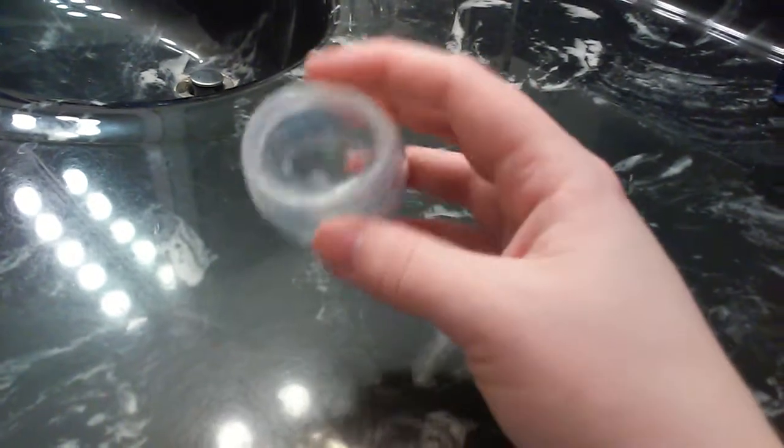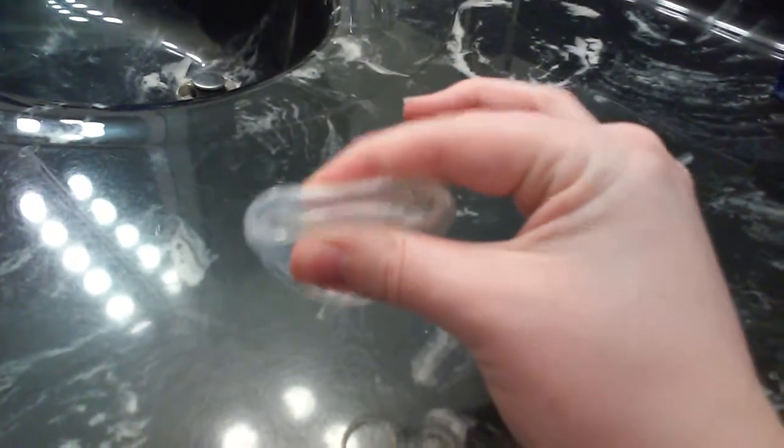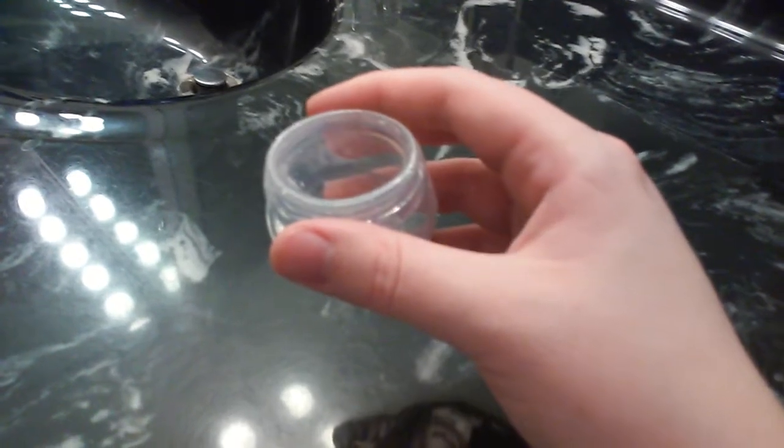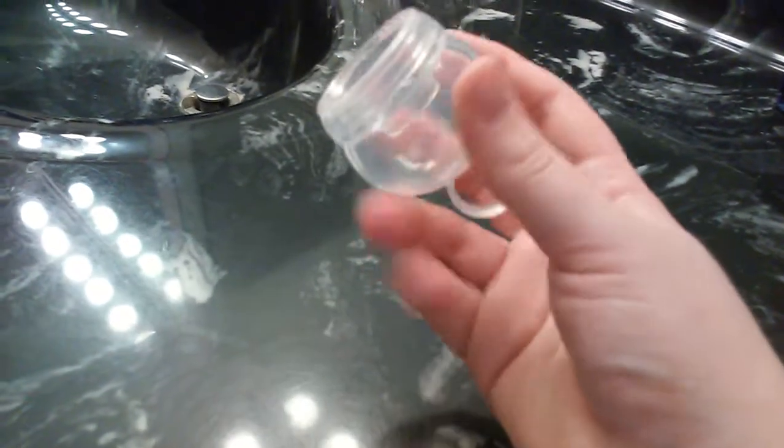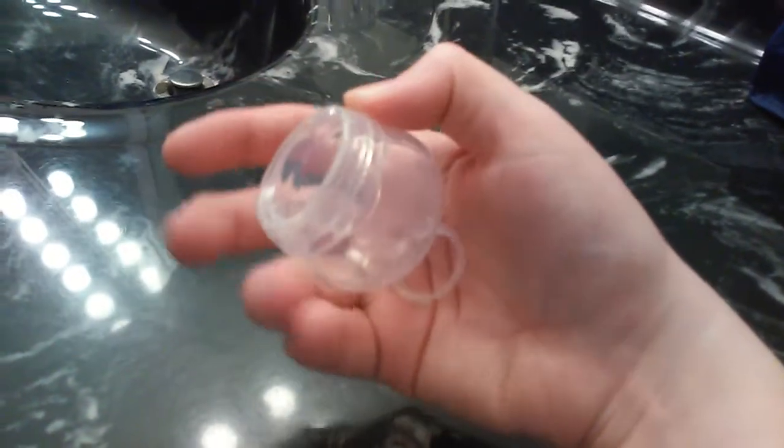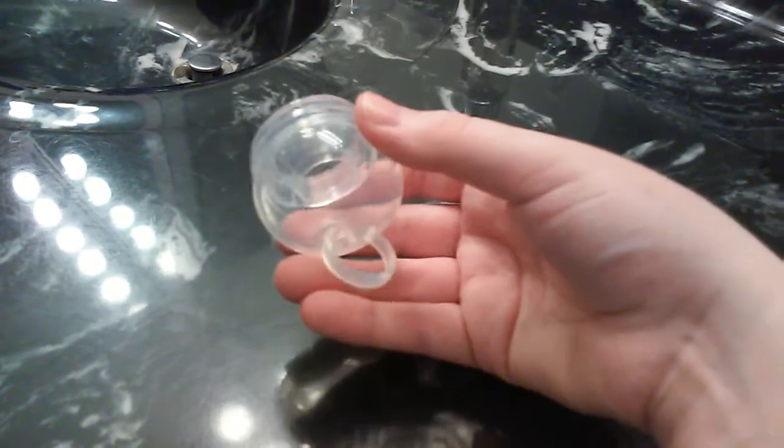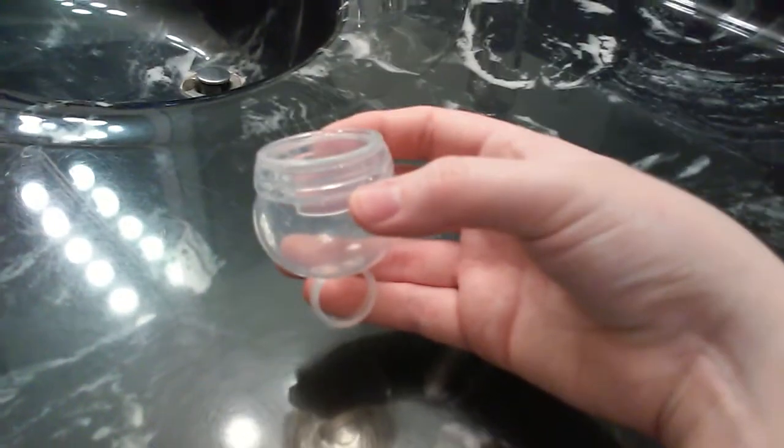I would consider this a somewhat firm cup at the top and fairly soft at the bottom. The reason I say it's somewhat firm at the top is because it does have that double rim which makes it feel much firmer. With this cup you could do the C fold to insert it. You can also do the punch down fold which is a little bit harder, makes the cup a little bit bigger to insert. I have not been able to successfully do the origami fold with this cup, but I'll keep practicing.